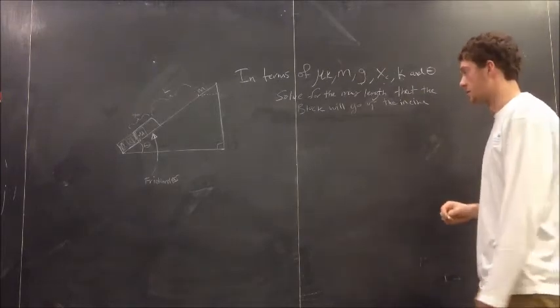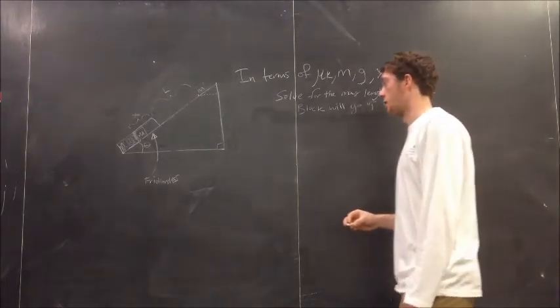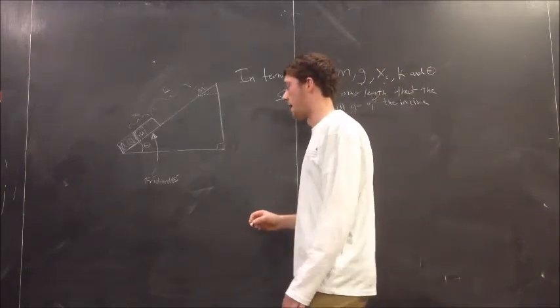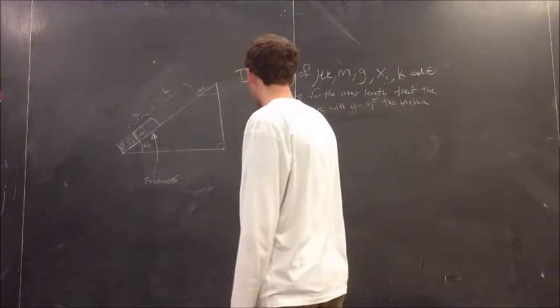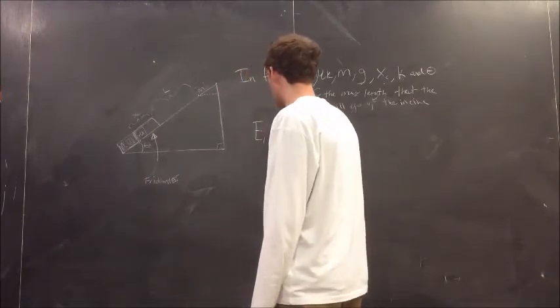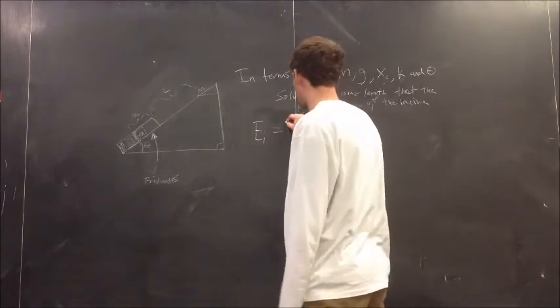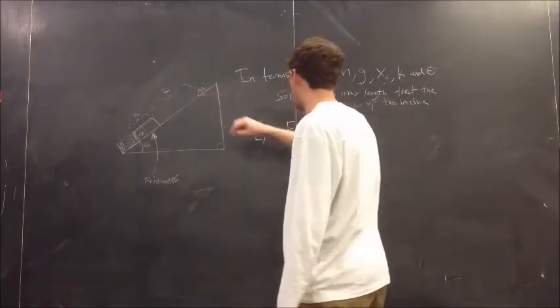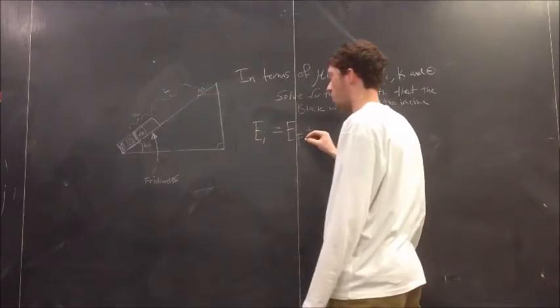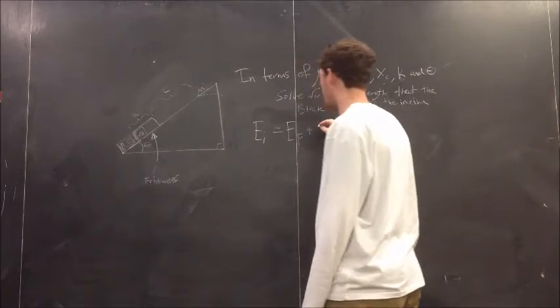We're not going to be using any numbers. So, in order to start this question, we have to consider the fact that the initial energy of this block, energy initial, is going to be equal to the energy final of the block when it stops moving, plus some work, some external work, in this case friction, that is done on the block.